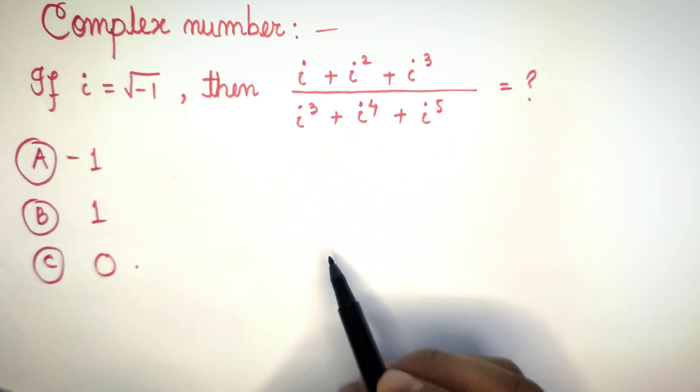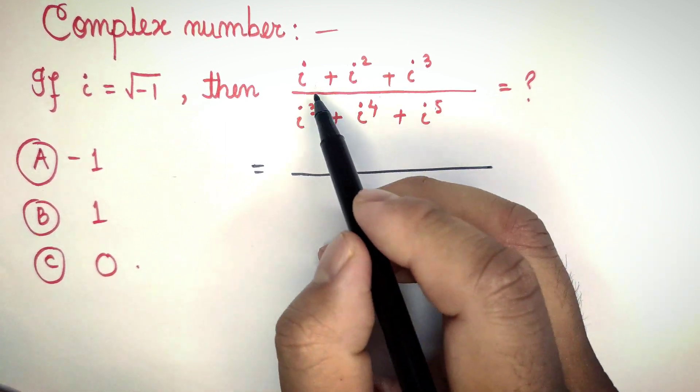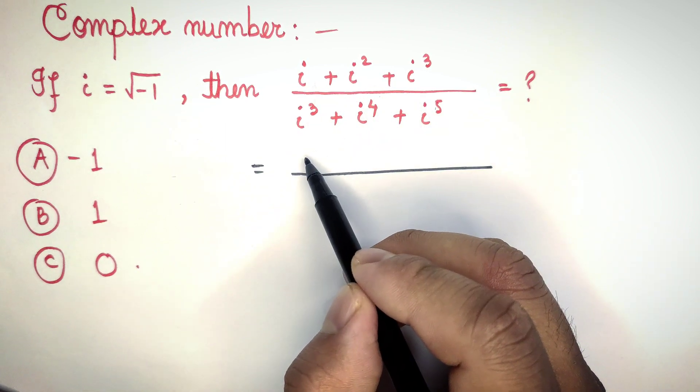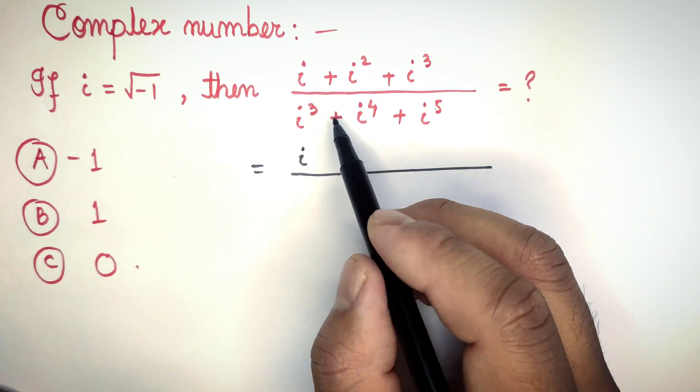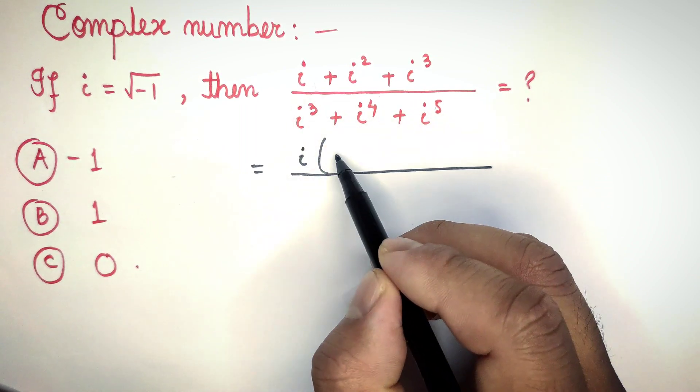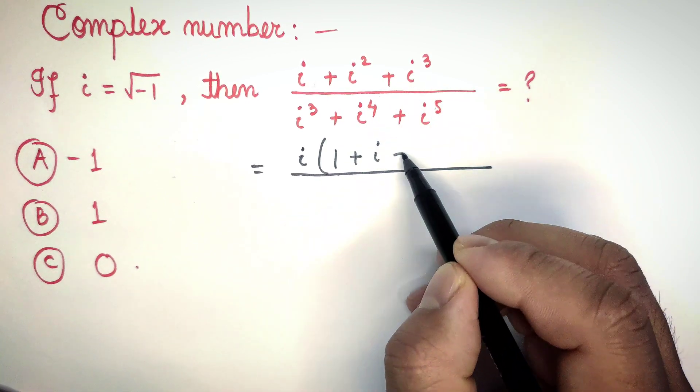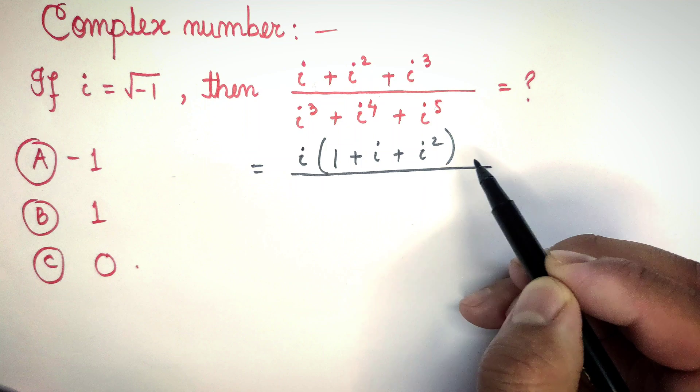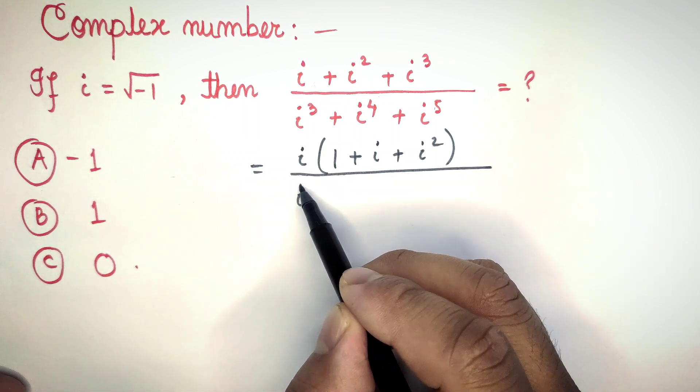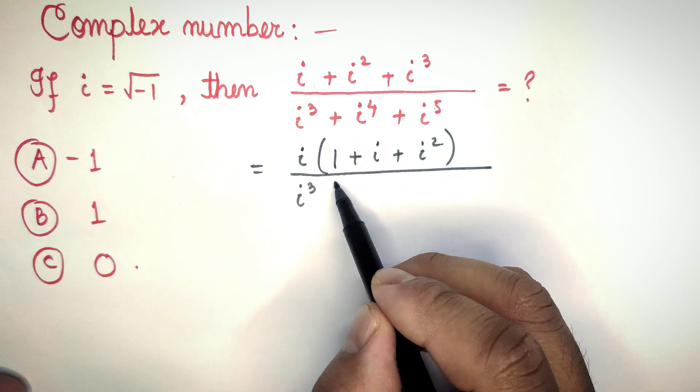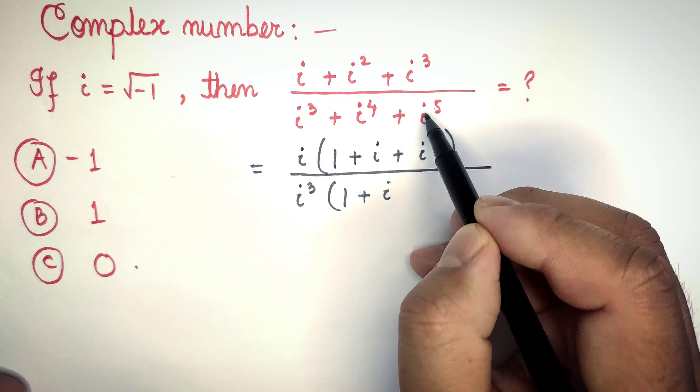Here this can be written as: we can take out iota common from the numerator. If i is taken as common, then it remains only here one, then here i, then here i squared. For the denominator, we can take out i to the power three as common, so here remains only one plus here remains i and here remains i squared.